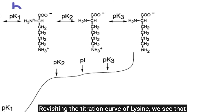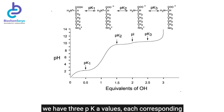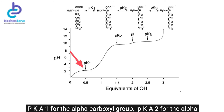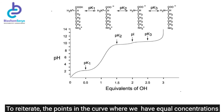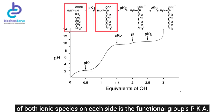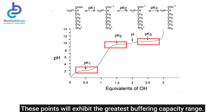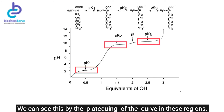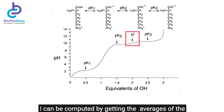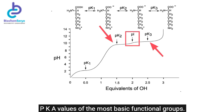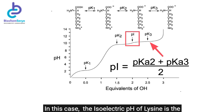Revisiting the titration curve of lysine, we see three pKa values: pKa1 for the alpha-carboxyl group, pKa2 for the alpha-amino group, and pKa3 for the epsilon-amino group. At each pKa, equal concentrations of both ionic species exist, exhibiting the greatest buffering capacity, seen as the plateauing of the curve in these regions. For basic amino acids, the isoelectric pH (pI) is computed by averaging the pKa values of the two most basic functional groups — in lysine's case, the average of pKa2 and pKa3.